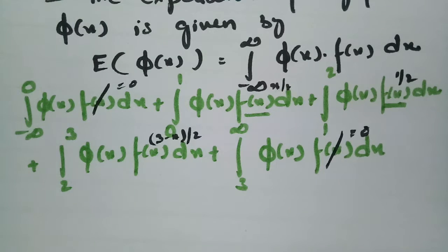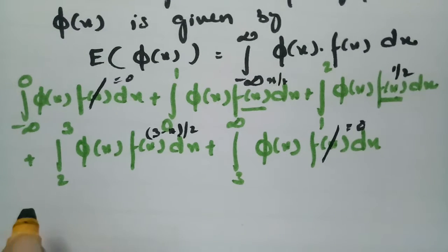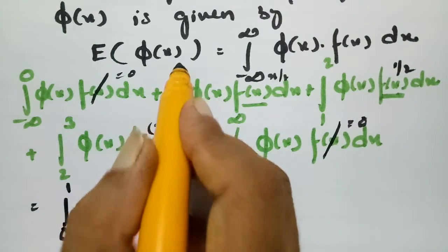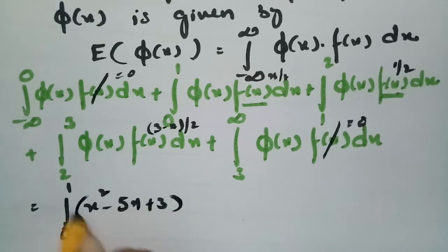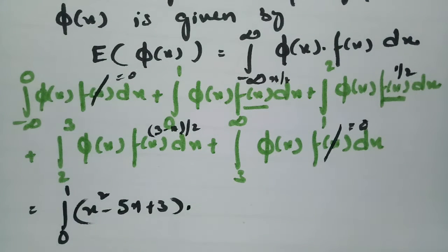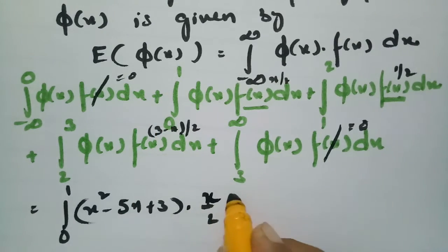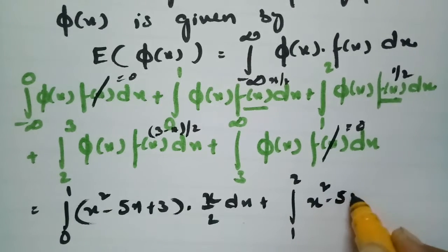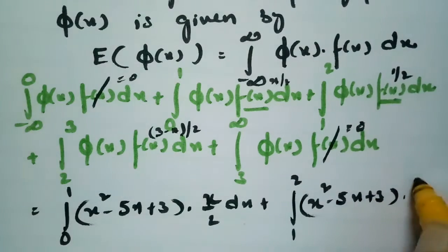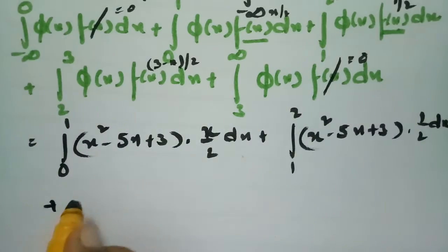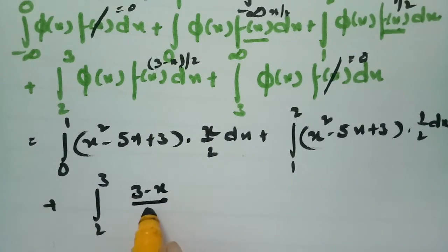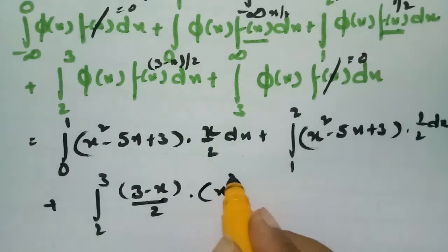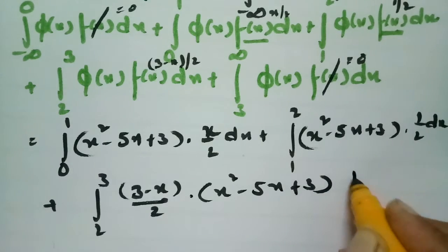Substituting these values, we get: integral from 0 to 1 of (x² - 5x + 3)·(x/2) dx, plus integral from 1 to 2 of (x² - 5x + 3)·(1/2) dx, plus integral from 2 to 3 of (x² - 5x + 3)·((3 - x)/2) dx.